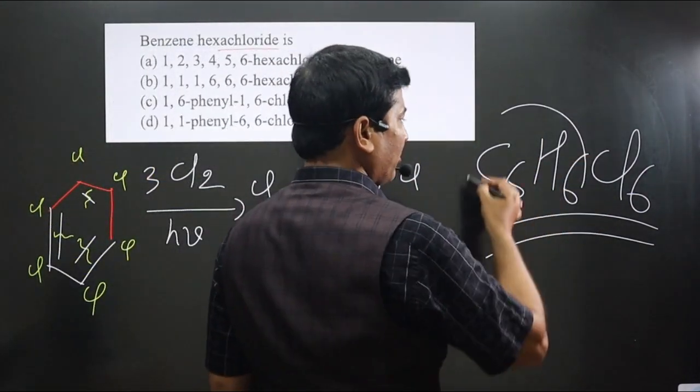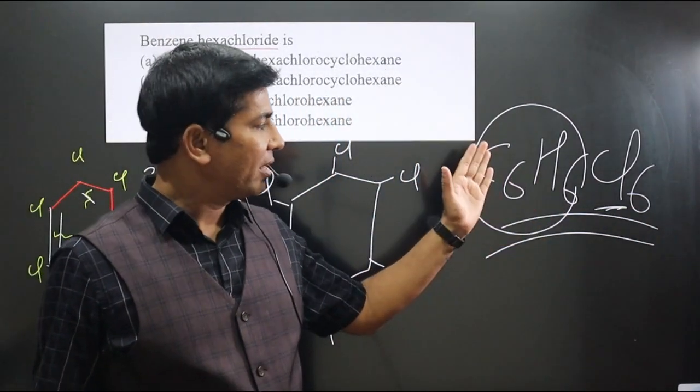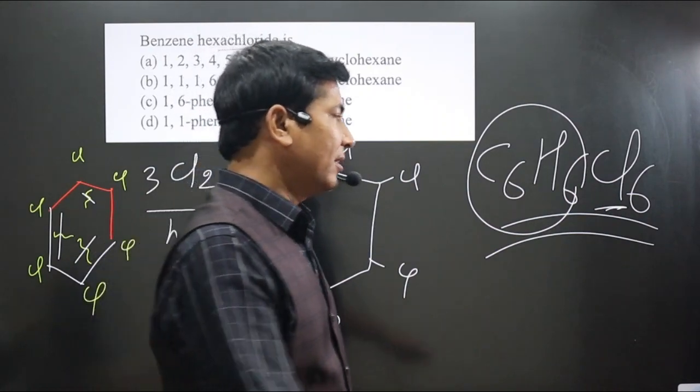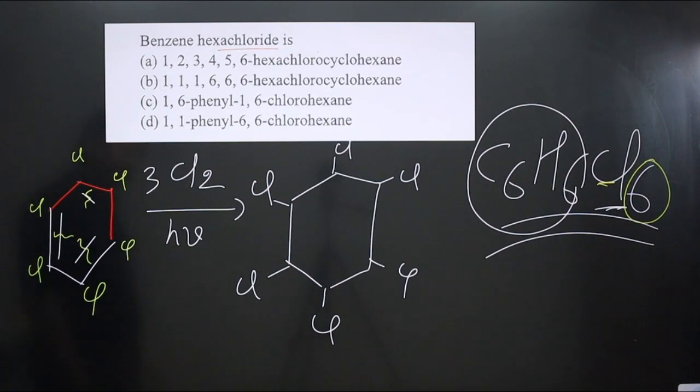You can see this is benzene hexachloride. You can see the chemical formula benzene hexachloride - Cl6 is there, hexachloride. This is how we get the compound.